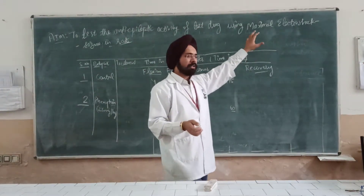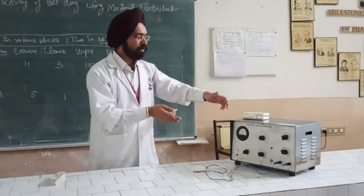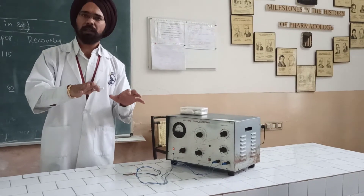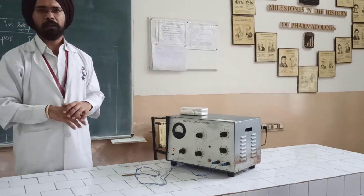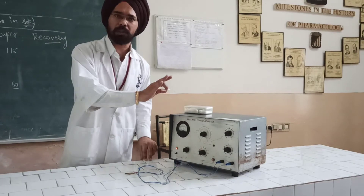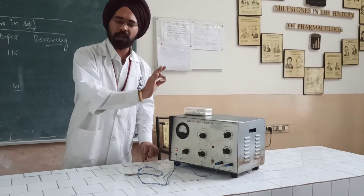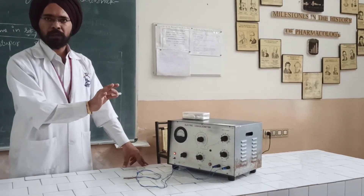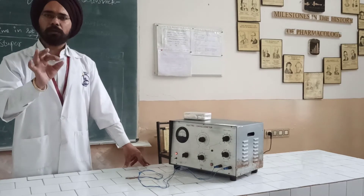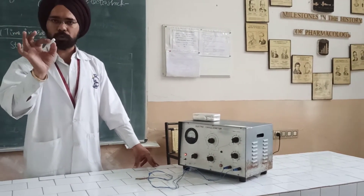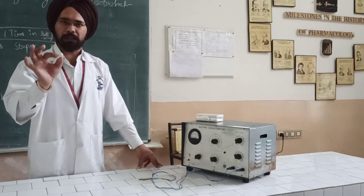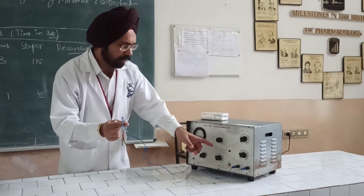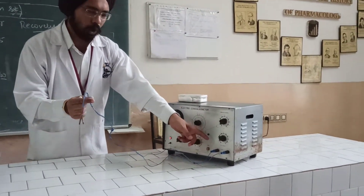Now, the electroshock seizure model — as you can see in front of you, there is a device used to produce electroshock seizures in rats or mice. This is called an electroconvulsio meter. This apparatus is used to send or produce maximum electroshock seizures in rats or mice by using specific electrodes which are connected to the plug of the apparatus.